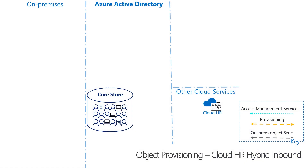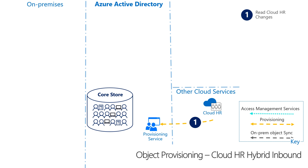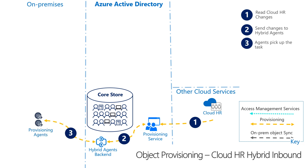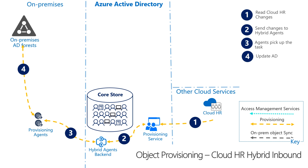Let's say we have Susie. After she accepts our generous offer, there is a record created for her in the cloud HR system — for example, Workday. In step one, the provisioning service queries Workday to find employee record changes. It will read Susie's new hire information and all the attributes attached to it. This is the same provisioning service used in the outbound provisioning flow. In step two, the provisioning service queues up the task to create a new object in AD through the hybrid agent's backend. In step three, the provisioning agent picks up the task from the backend service for any updates. Remember that the on-prem agents only initiate traffic to the cloud — never in the other direction. Then the agents pick up the fact that someone has been added, and go provision Susie, pushing the changes to Active Directory.